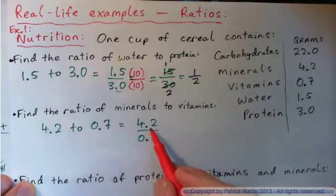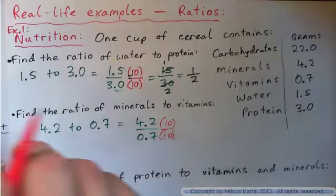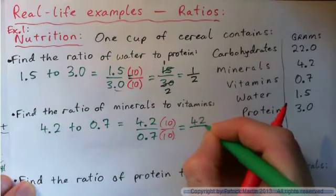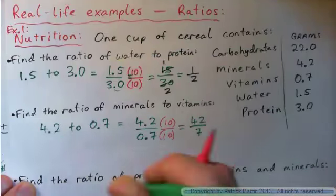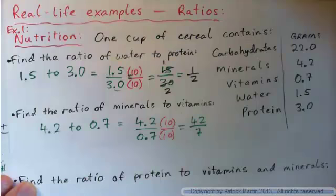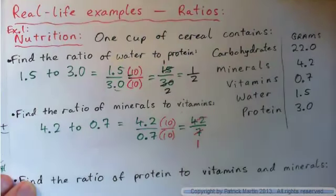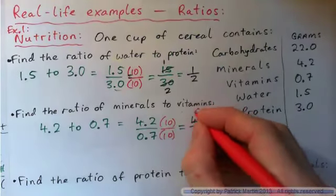I like to move the decimal point one place to the right, so I'm going to multiply it by 10 over 10. 4.2 times 10 is 42. 0.7 times 10 is 7. I'm going to put this guy in lowest terms. 7 into 7 goes once. 7 into 42 goes how many times?